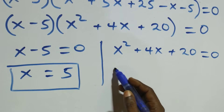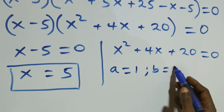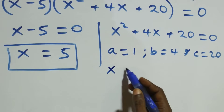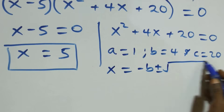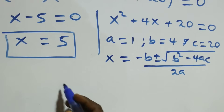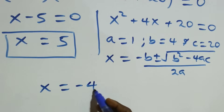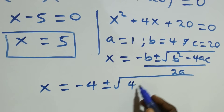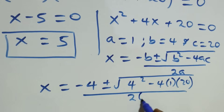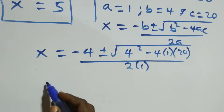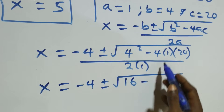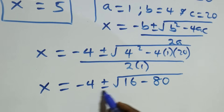For the second case, we have a quadratic equation with a equals 1, b equals 4, and c equals 20. Applying the quadratic formula — x equals minus b plus or minus square root of b squared minus 4ac, over 2a — we get x equals minus 4 plus or minus square root of 4 squared minus 4 times 1 times 20, over 2 times 1. That is, square root of 16 minus 80, over 2.